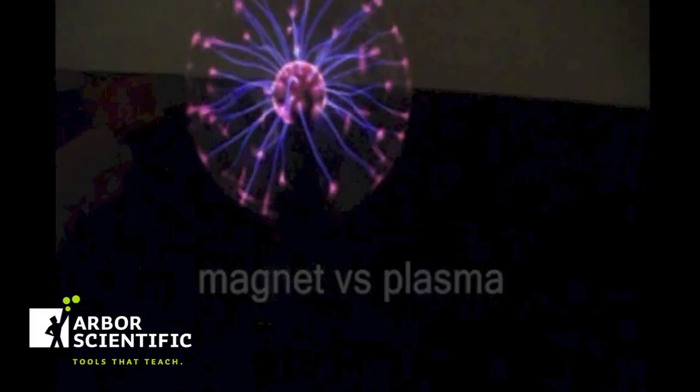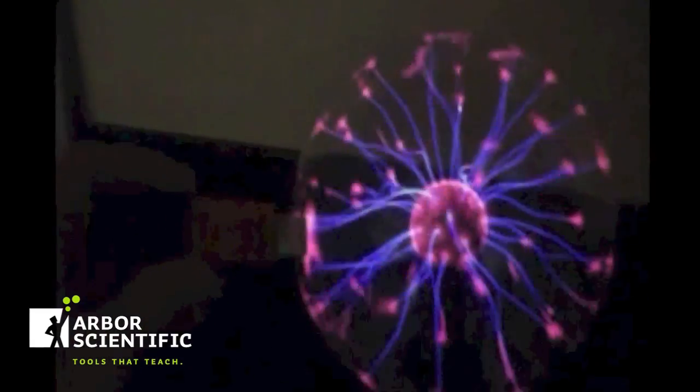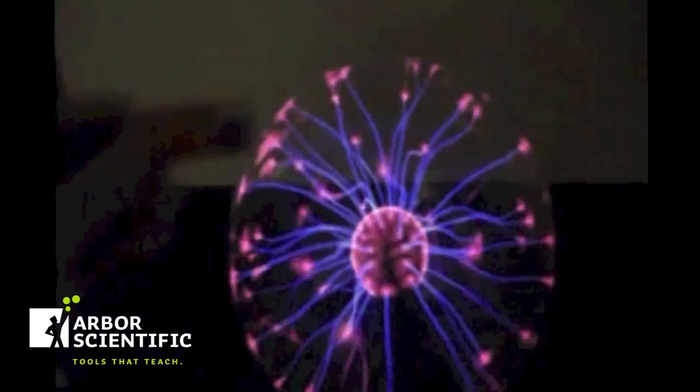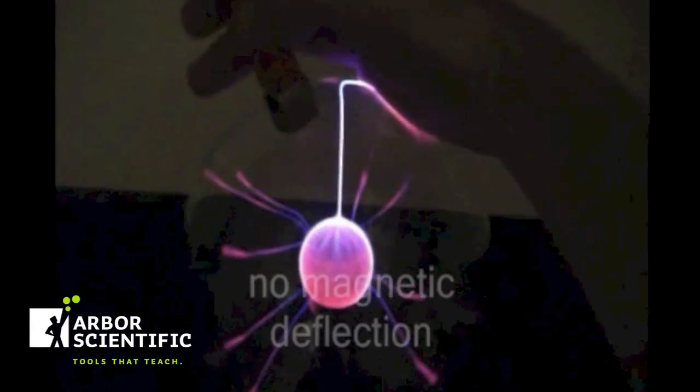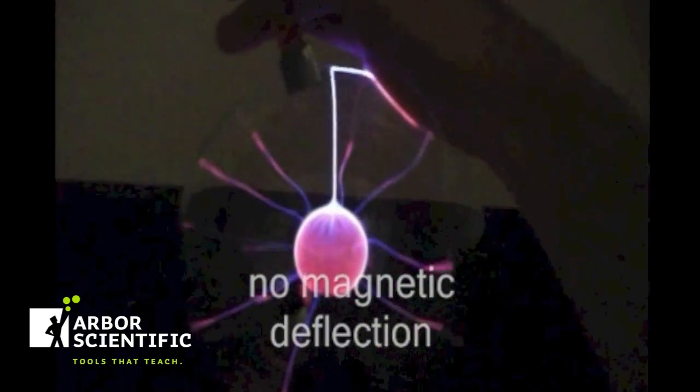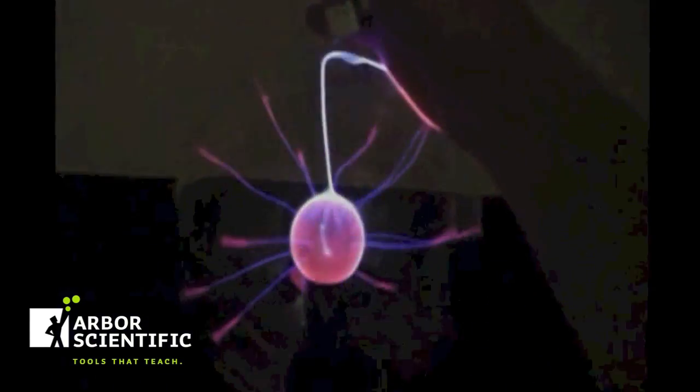Moving plasma can usually be controlled by magnetic fields, but this will not be visible for the plasma ball. It operates on a high frequency alternating voltage, and because of this, the charges do not have time to get moving far or fast, so they will not get deflected.